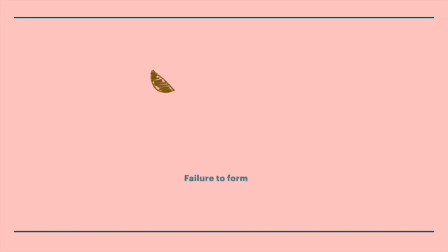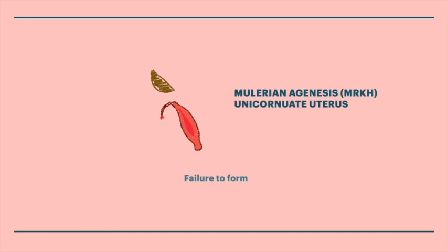Now imagine there is only one progranular cell — one bowl. This is what we call a failure to form, because you only have one, or even none. With only one side poured down, there is no need for fusion or cleavage — you end up with just one uterus, one horn of the uterus. Also, this bowl represents the kidney, so there is a very high association between kidney agenesis and Müllerian anomalies.